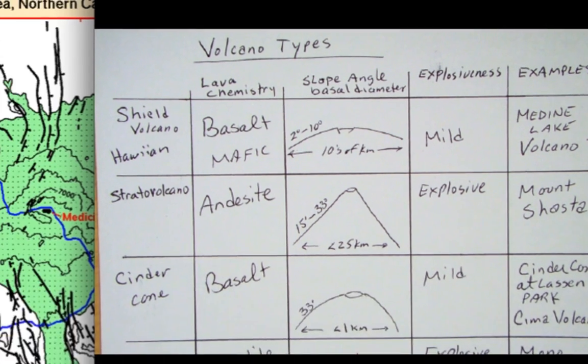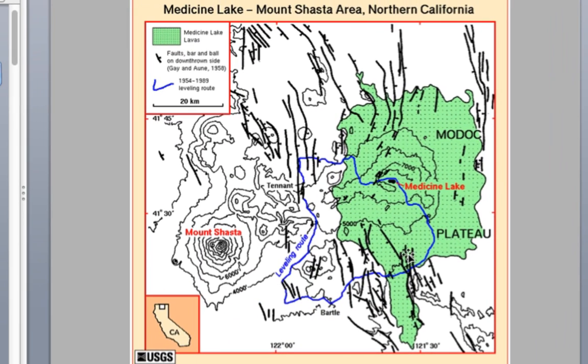In fact let's compare those two volcanoes. Here on my PowerPoint I see Northern California, we're up here almost at the Oregon border and we see the outline of Mount Shasta. Note that its diameter here is about 20 kilometers and then not too far to the east of Mount Shasta is another big volcano called the Medicine Lake volcano and this one's composed primarily of basalt fluid lavas that are more runny.